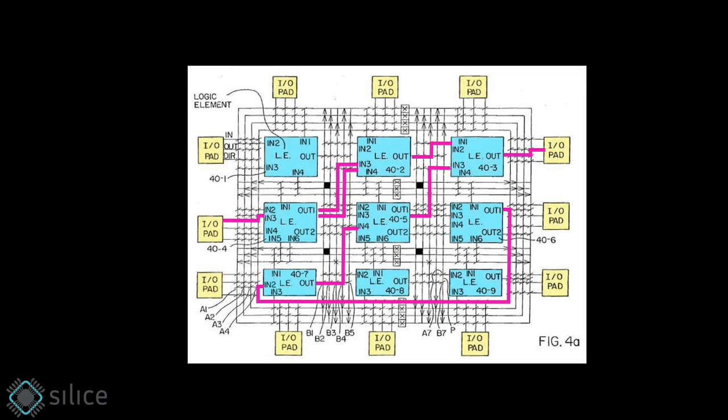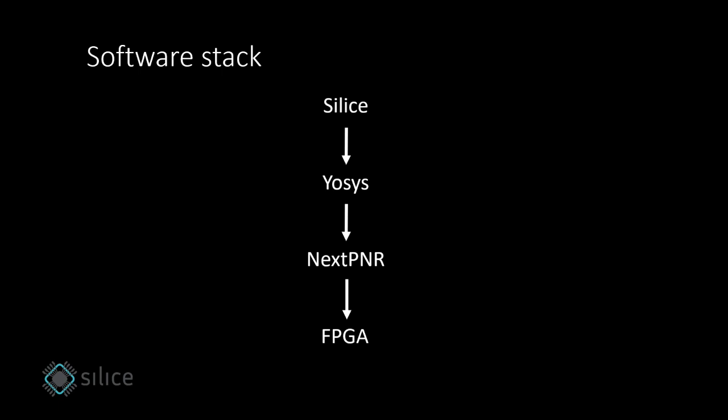Programs written in Silice are compiled into a configuration for the logical elements and interconnections of an FPGA. Silice is far from alone in achieving this goal. In fact, a full open source software stack is used. The output of Silice is fed into software called Yosys, and then NextPNR, to create the final configuration file for the FPGA. It's worth noting that the output of Silice is a Verilog program, a very common hardware description language. Silice can import Verilog modules, and Silice code can be reused from Verilog.